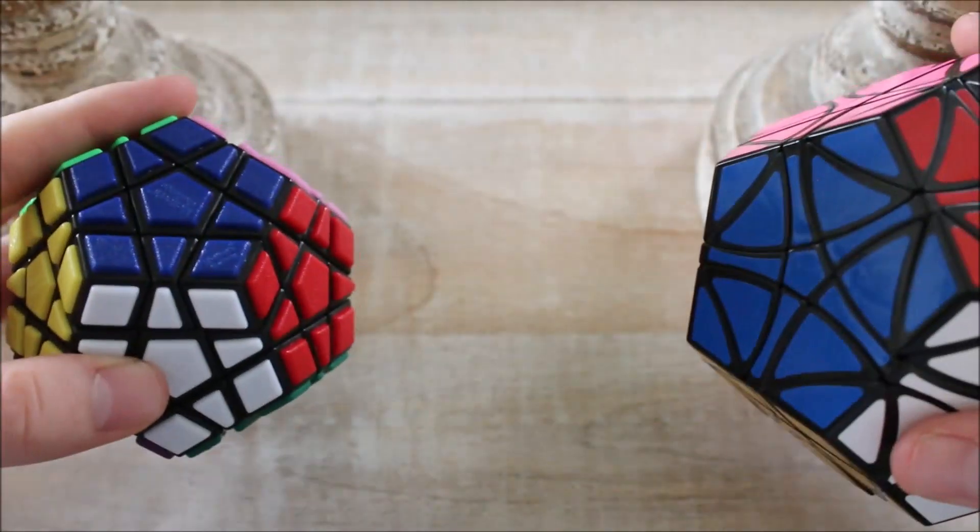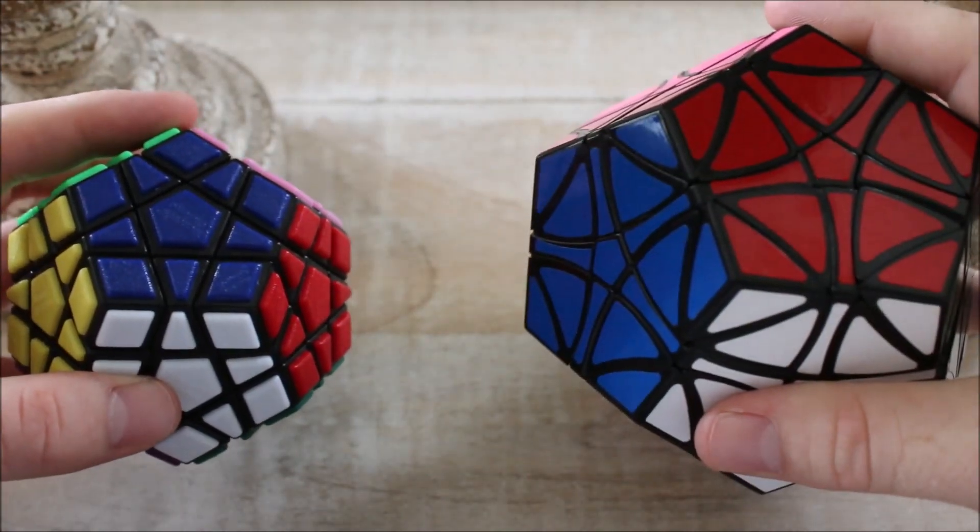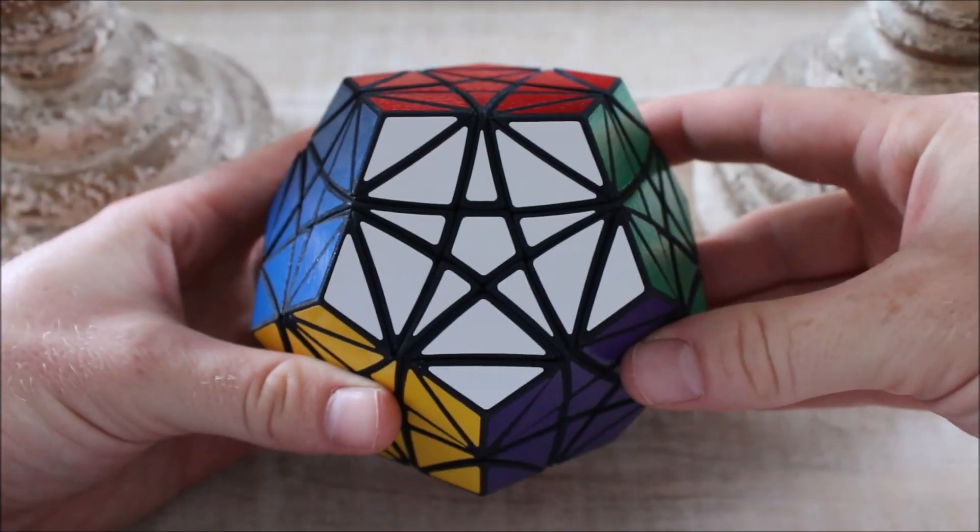So, if you take these two puzzles together, a Helicopter Dodecahedron and a Megaminx, you get the Megacopter.